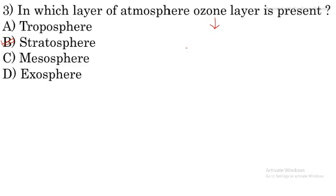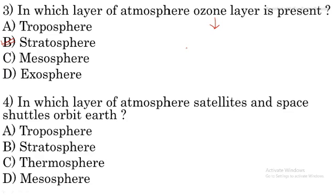Question number 4: in which layer of the atmosphere do satellites and space shuttles orbit Earth? The answer is the thermosphere. So option C is the right option for this question.